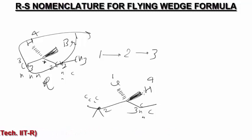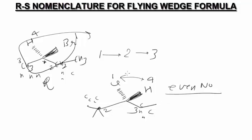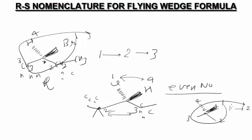You can see the fourth priority group is not on the broken wedge. So we have to bring it onto the broken wedge by an interchange operation. We use an even number of interchanges to avoid any configurational change. I will exchange the fourth and first priority groups, and at the same time exchange the second and third priority groups. Now I can write: first priority on one side, fourth priority on the broken wedge, third priority on one side, second priority on the other side. Then check the 1, 2, 3 movement — it comes out as clockwise. That is why the configuration of this carbon is R.